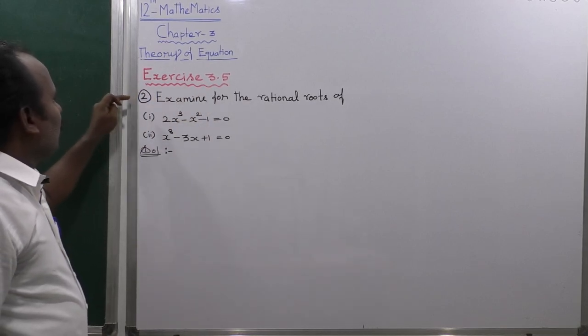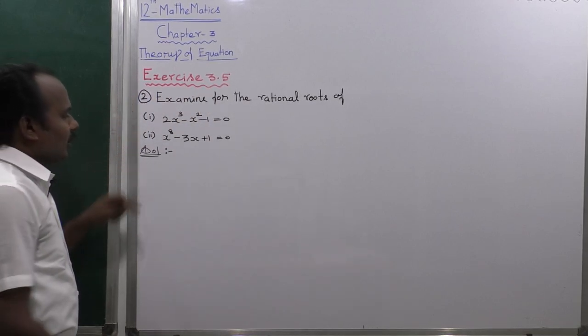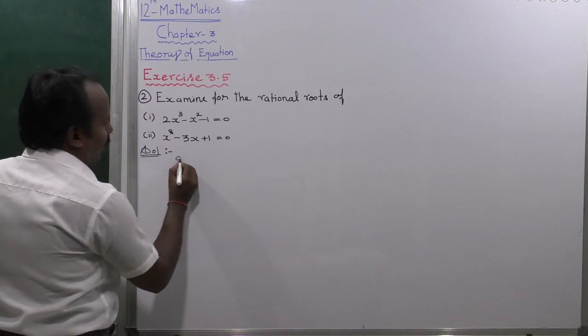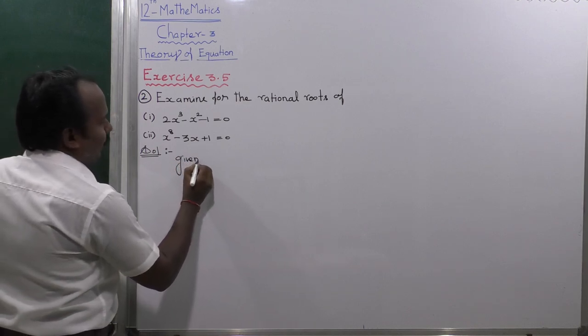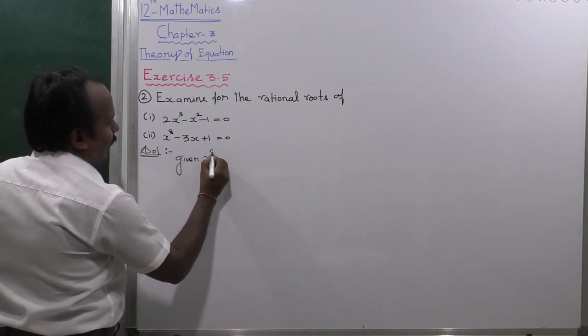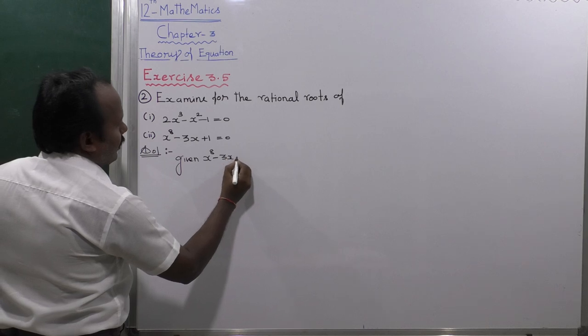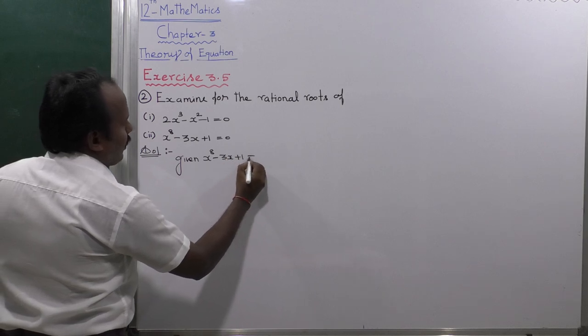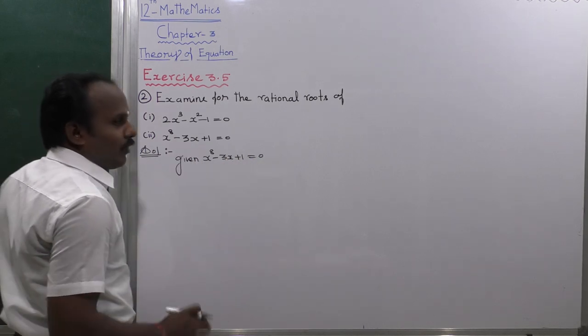x is 3.5, second sum, second substitution. The given equation is: x power 8 minus 3x plus 1 is equal to 0. This one is x power 8.